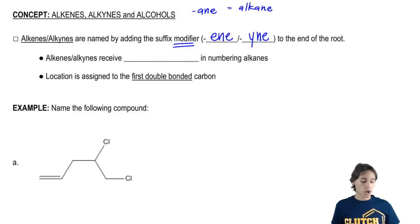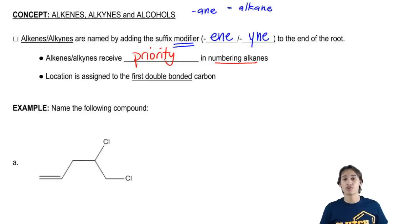Alkenes and alkynes are actually going to receive priority in numbering. This is also going to be the very first time that now when it comes to numbering the chain, we are going to give priority to this group.